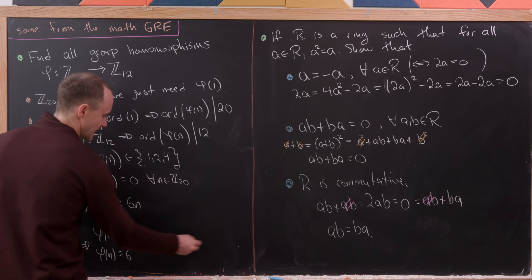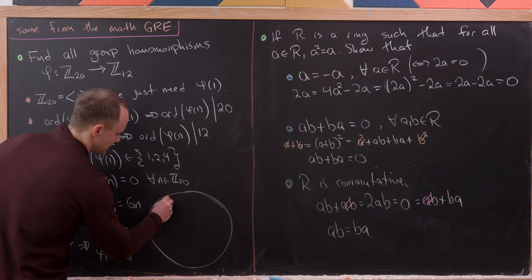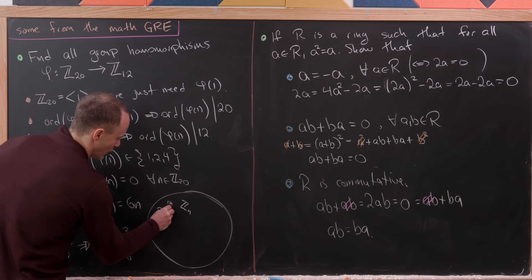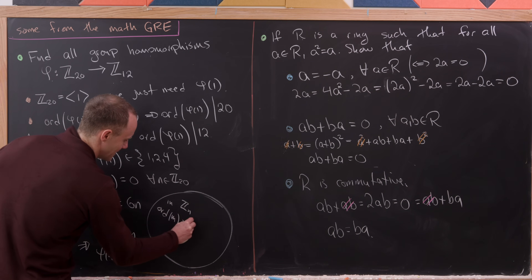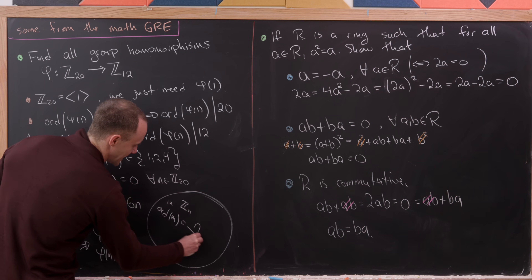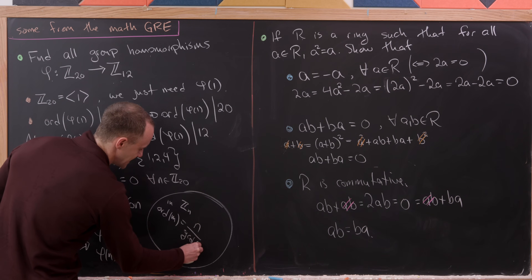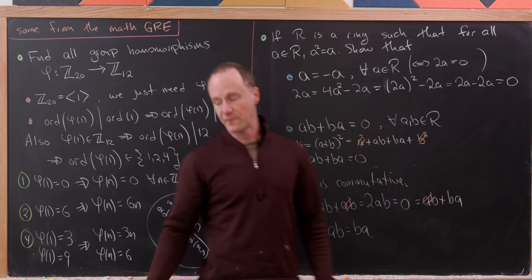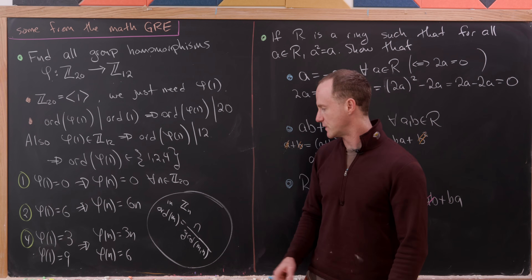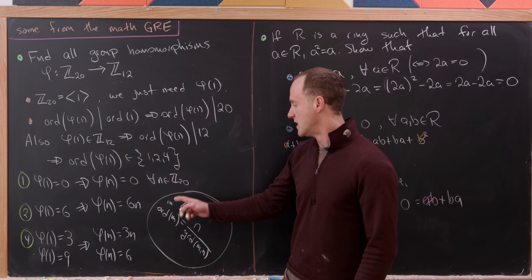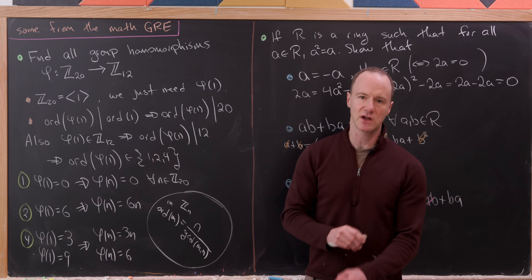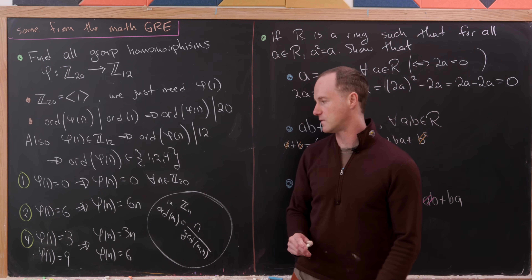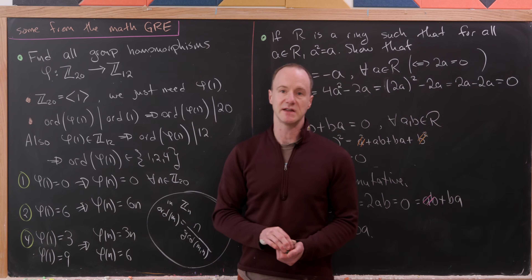For reference, the general result is: inside Zₙ, the order of element m is n / gcd(m, n). With small numbers we didn't need it here, but for larger numbers this formula is very helpful. And that's a good place to stop.